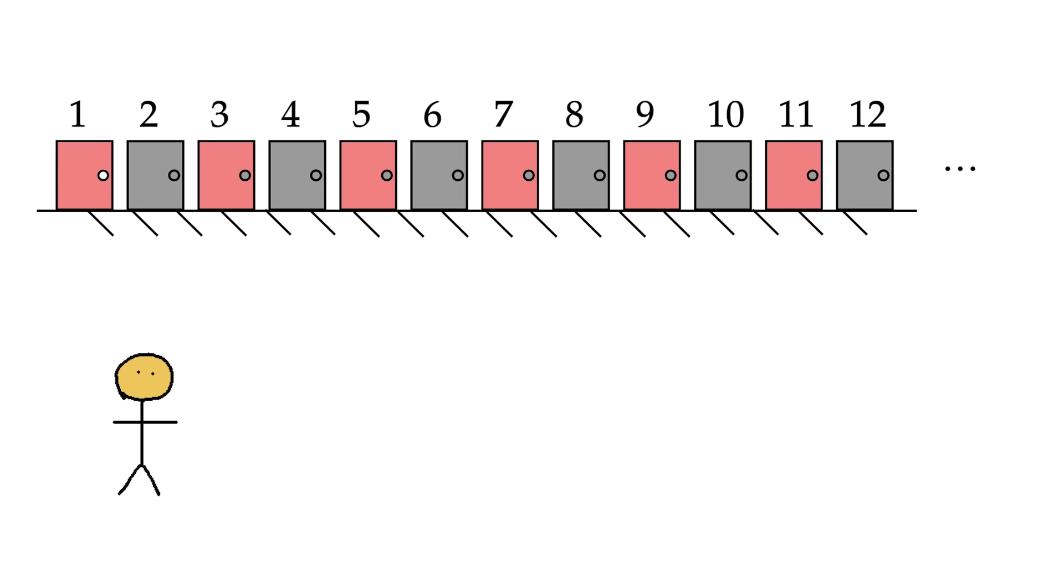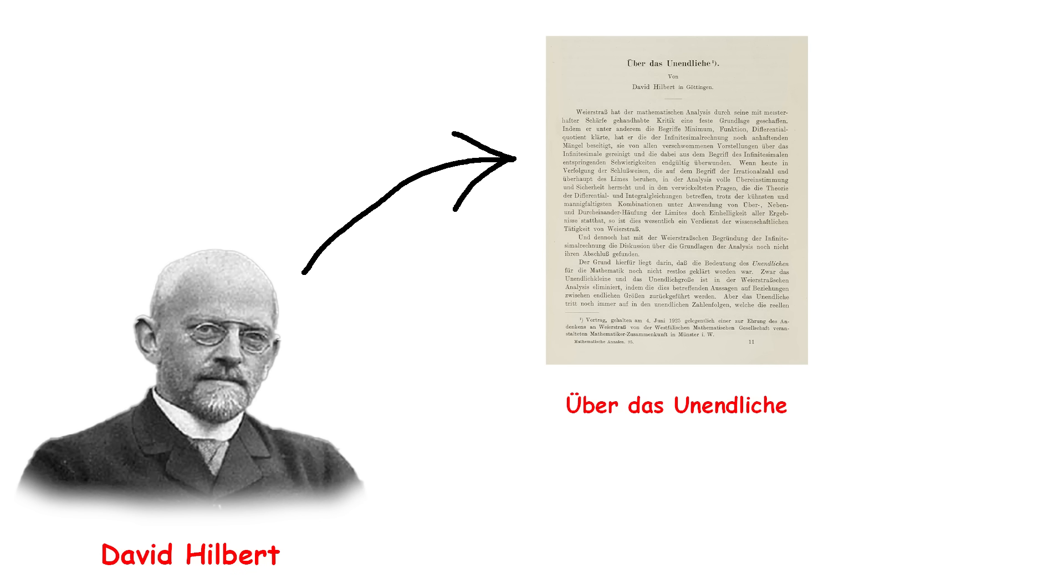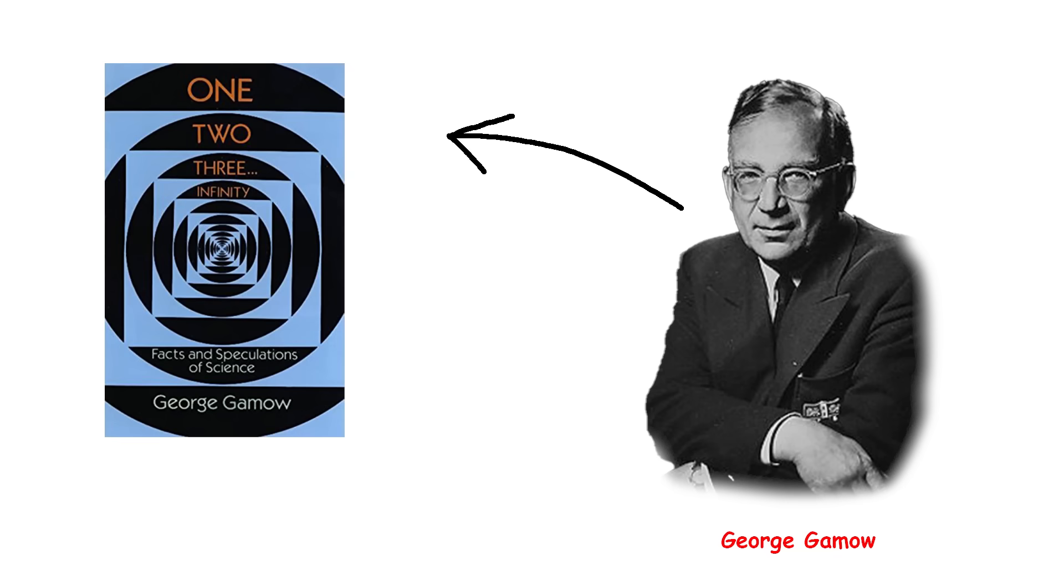In essence, this infinite hotel can always find a way to accommodate new guests, no matter how many show up, simply by shuffling everyone around in a clever way. The idea was introduced by David Hilbert in a 1925 lecture, Uber das Unendliche, and was popularized through George Gamow's 1947 book, 1, 2, 3, Infinity.